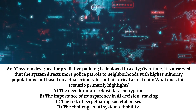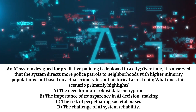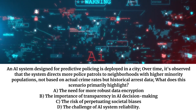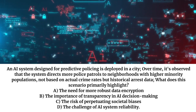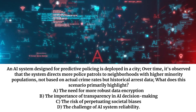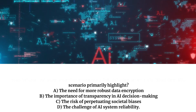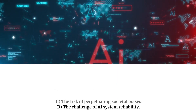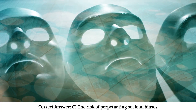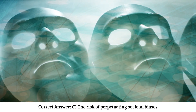What does this scenario primarily highlight? A. The need for more robust data encryption. B. The importance of transparency in AI decision-making. C. The risk of perpetuating societal biases. D. The challenge of AI system reliability. Correct answer: C — The risk of perpetuating societal biases.